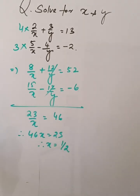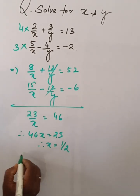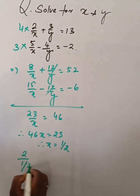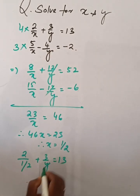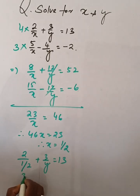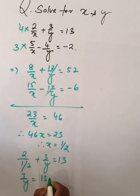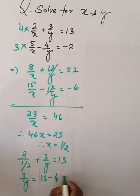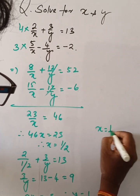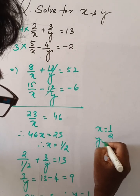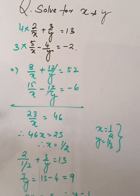Keeping this value in equation 1: 2 by (1 by 2) plus 3 by y is equal to 13. So 3 by y is equal to 13 minus 4, that is 9. Then 9y is equal to 3, therefore y is equal to 1 by 3. x is equal to 1 by 2, y is equal to 1 by 3 are the answers.